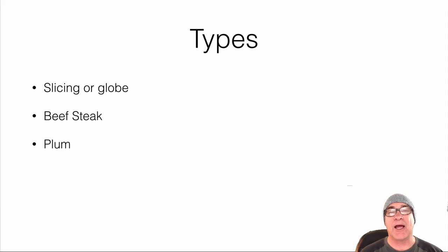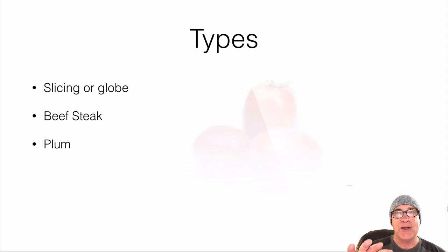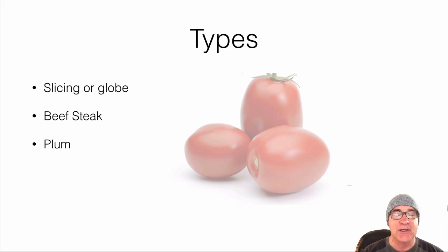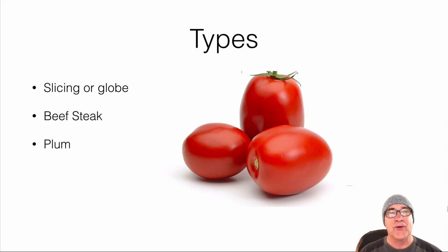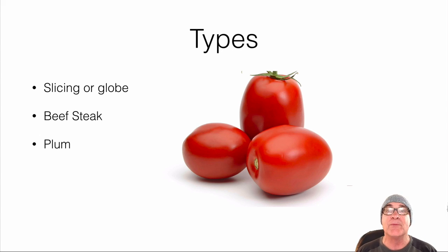The next one I'd like to talk about is plum tomatoes. They're relatively new to the marketplace and have been primarily bred to have higher solids and thicker skin. You're going to see these in tomato pastes and tomato sauces. They're not terribly flavorful but they stick together and spread out more evenly, particularly in pastes, pizzas, and pasta dishes.